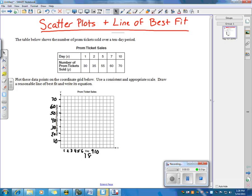So we're talking about scatter plots and line of best fit. There's a question about prom ticket sales with a table here, and they want us to first plot these data points. So we're going to do that first.